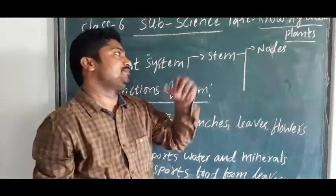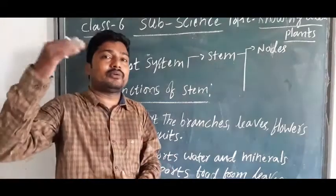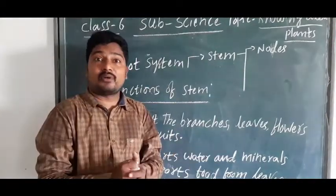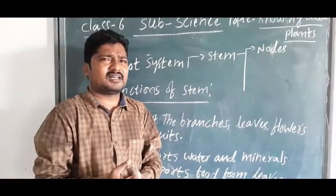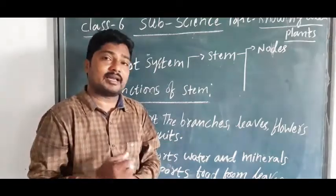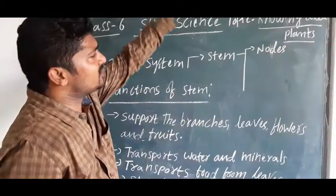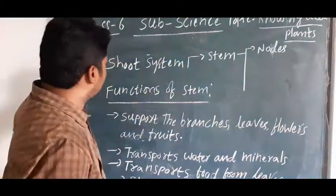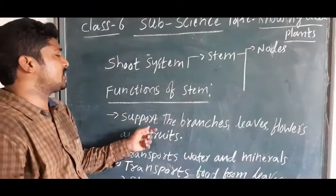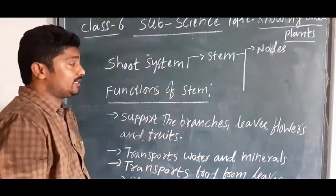Now let's look at the stem. Above the root, the stem may sometimes be green in color or brown in color, and the color can change according to the area. So what are the main functions of the stem? The stem is used to support the branches.